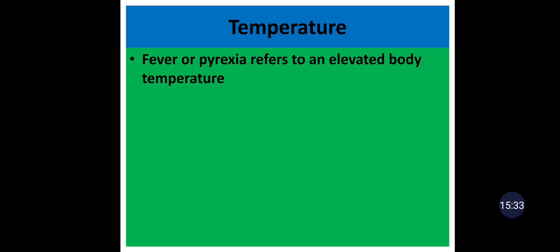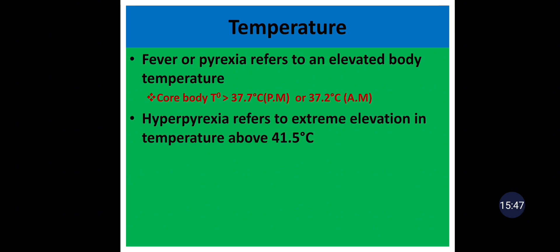Fever or pyrexia refers to an elevated body temperature when core body temperature is greater than 37.7°C in the afternoon or greater than 37.2°C in the morning. Hyperpyrexia refers to extreme elevation in temperature above 41.5°C, which occurs in patients with severe infections and intracranial hemorrhage. One important distinction: fever is an elevated body temperature in conjunction with an increased hypothalamic temperature set point, whereas hyperthermia is an elevated body temperature in the absence of an increased hypothalamic temperature set point.